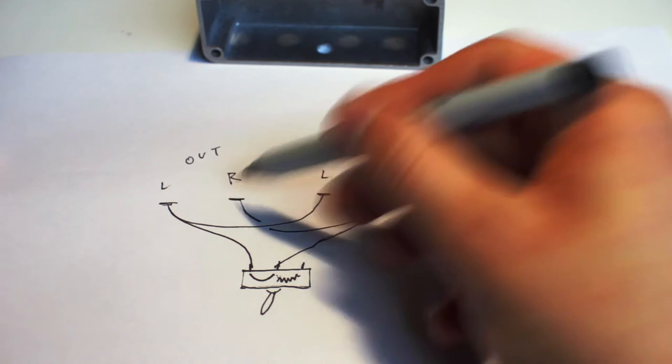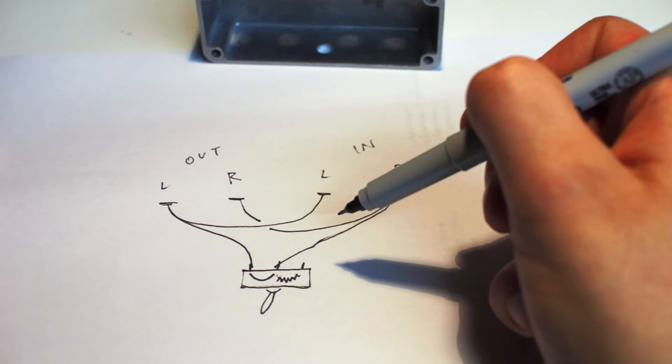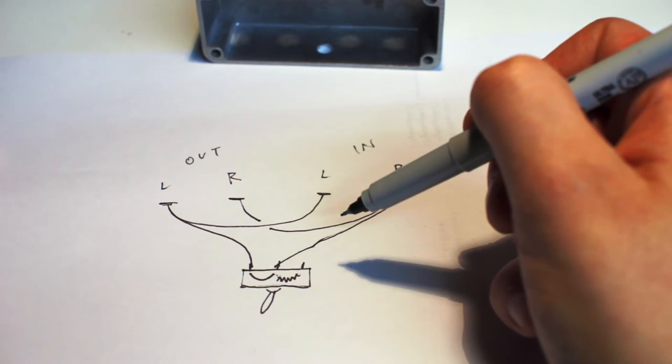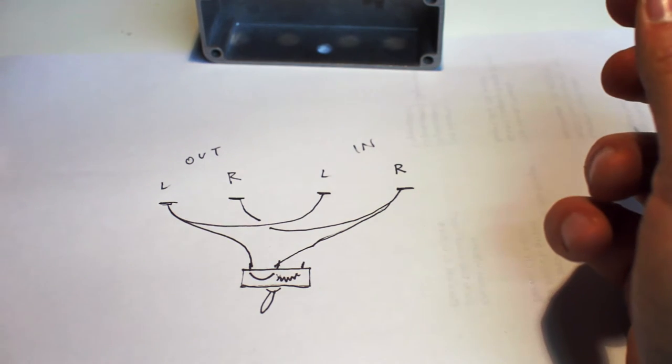So, then all four jacks are connected together in mono operation, and this effectively passively sums left and right, the same as my friend's Y cable setup did.